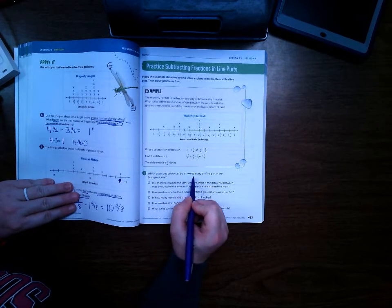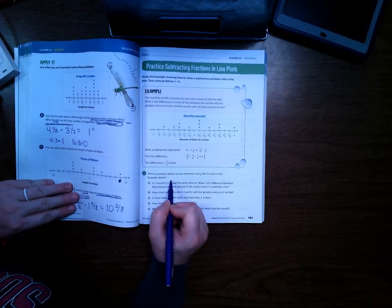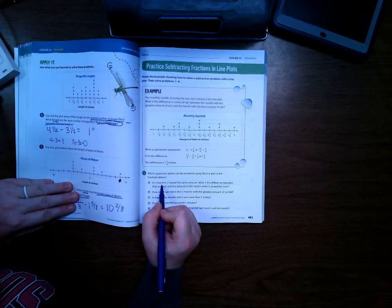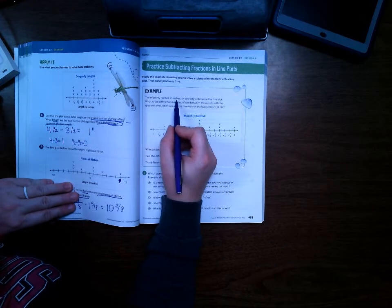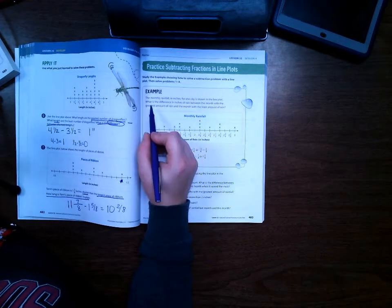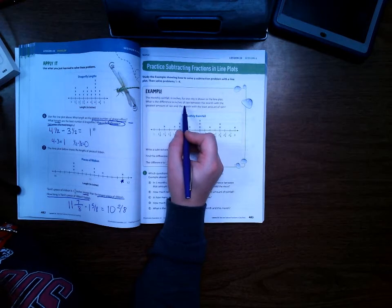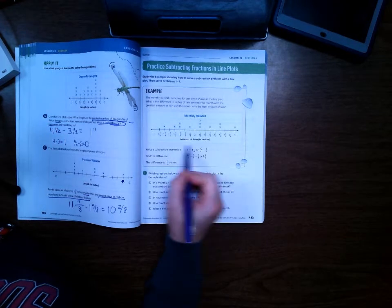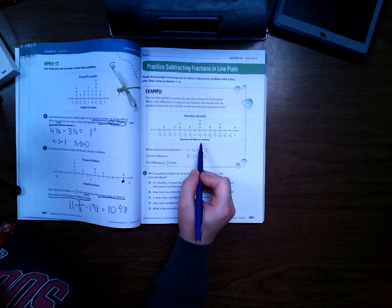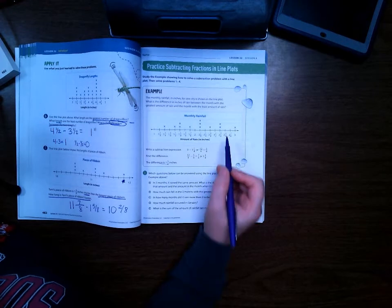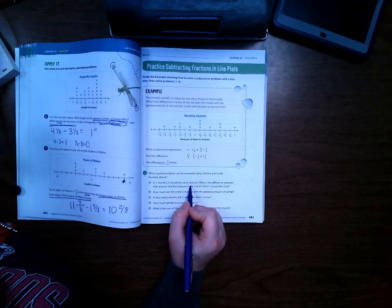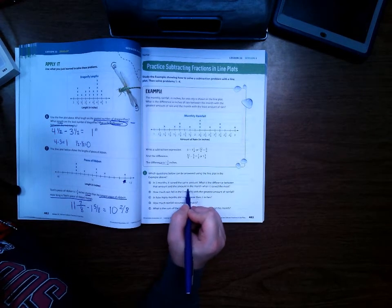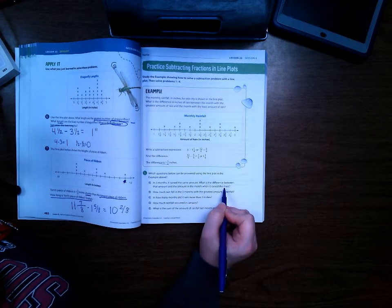Which question below can be answered using the line plot in the example above? In three months, let's read this problem first. The monthly rainfall in inches for one city is shown in the line plot. What is the difference in inches of rain between the month with the greatest rain and the month with the least amount of rain? So that's where it showed right here.